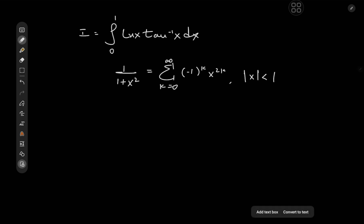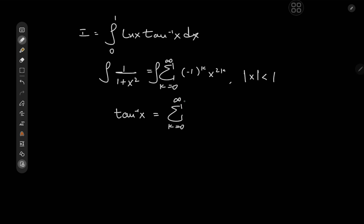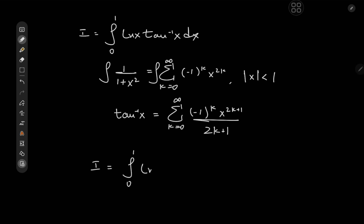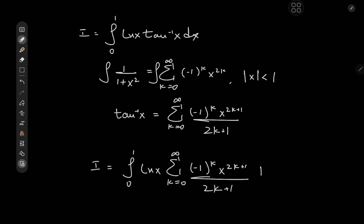It doesn't look like we have this geometric series as part of the integrand, but if we integrate it, we get arctangent(x), which is indeed one of the terms in our integrand, equal to the sum over k from 0 to infinity of (−1)^k times x^(2k+1) over (2k+1). So we'll make use of this infinite series and write I as the integral from 0 to 1 of log(x) times that sum dx.